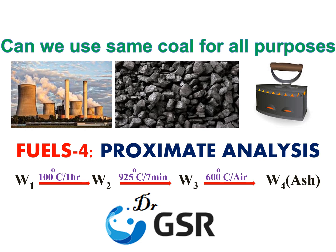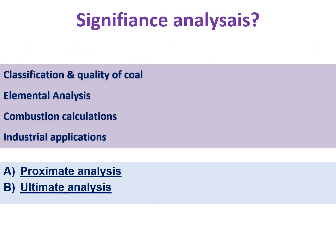Our topic is proximate analysis — this is the fourth video on fuels. You can watch all my videos on different topics in my channel. So what is the significance of analysis? If you do the analysis of a coal, you can know the classification and quality of coal — which fuel is good, which is high quality, which is low grade. You also learn elemental analysis, what is actually present in the coal, and combustion calculations. It can be done in two ways: proximate analysis and ultimate analysis. Today we are going to discuss proximate analysis.